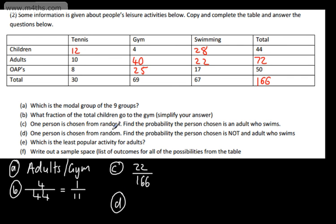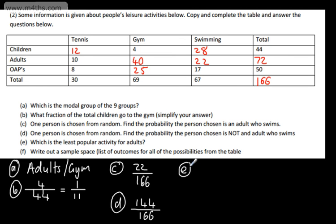Part D: one person is chosen at random — find the probability that the person chosen is not an adult who swims. We simply take this away from the total, which gives 144 out of 166. The probability of something not happening is 1 minus the probability of it happening. Part E: which is the least popular activity for adults? Looking across: tennis at 10, gym at 40, swimming at 22. So the least popular is tennis.